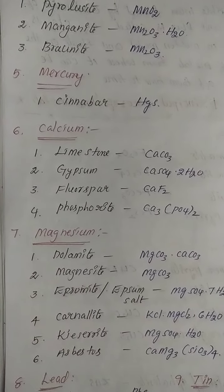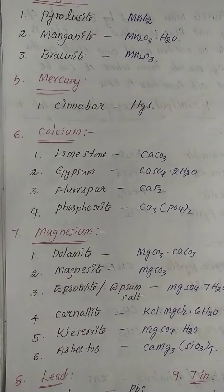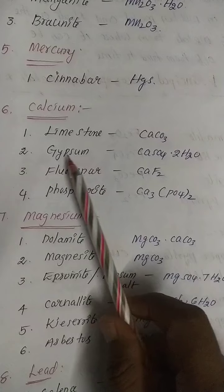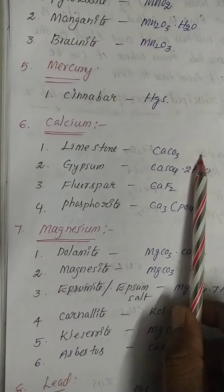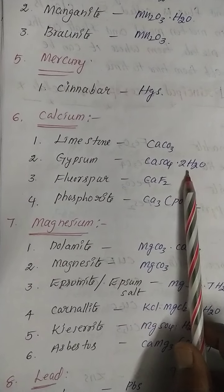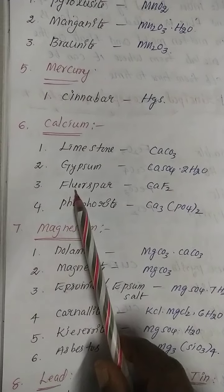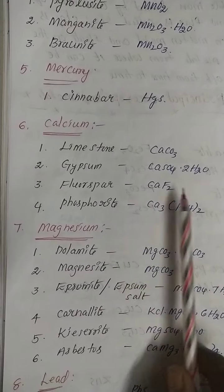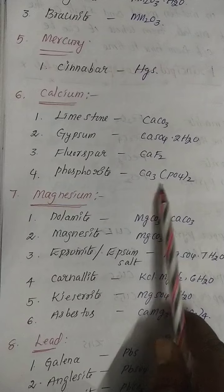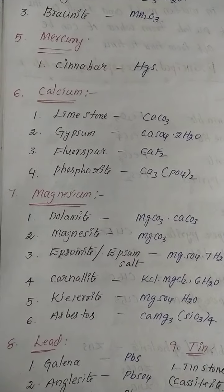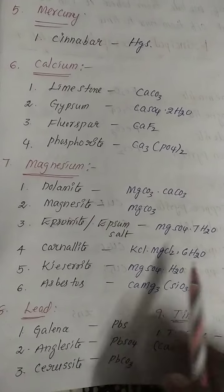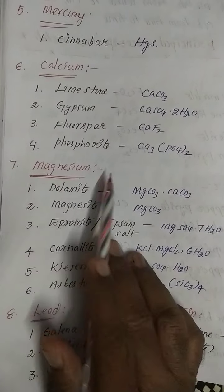Next is calcium. Calcium has a number of minerals. The important ones are: limestone (calcium carbonate, CaCO₃), gypsum (calcium sulphate with two moles of water, CaSO₄·2H₂O), fluorspar (calcium fluoride, CaF₂), and phosphorite (calcium phosphate). These four are the important minerals and ores of calcium.